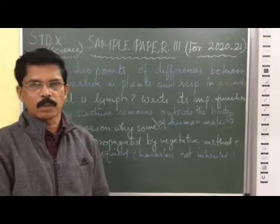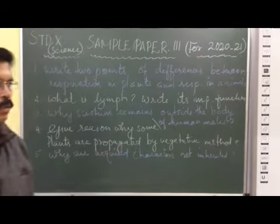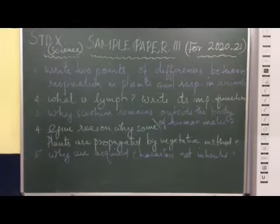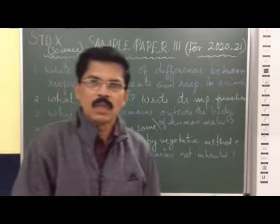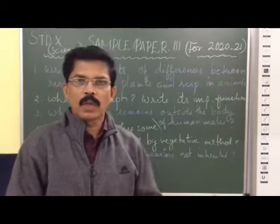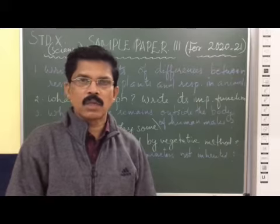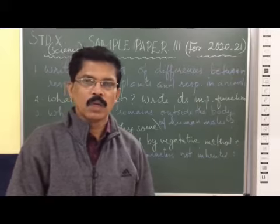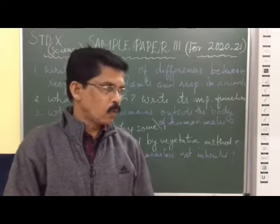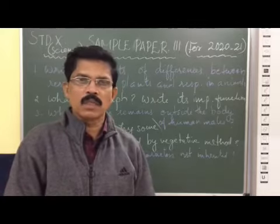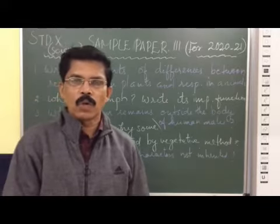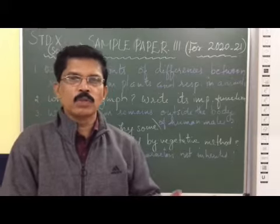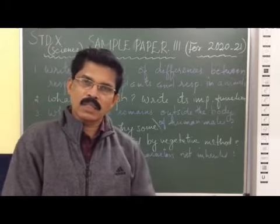Now the second question - what is lymph and its important function? Lymph is light yellow colored fluid that drains from the capillaries into the extracellular medium. The lymph is also called extracellular fluid. They are also called interstitial fluid or extracellular fluid as they fill in the space between the cells.